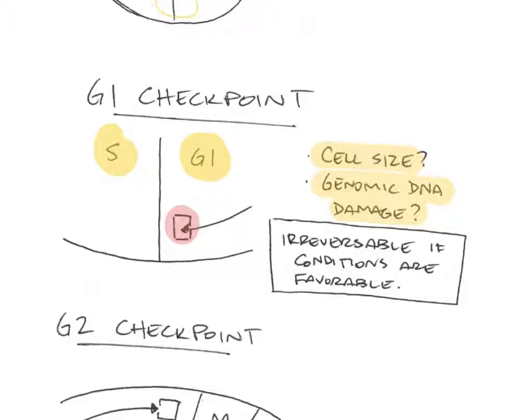And this process is irreversible, and this is really important. It is irreversible if those conditions are favorable, meaning DNA will be copied if it goes forward. And that's why a minute ago we just mentioned that it tries to repair that genetic DNA, or that genomic DNA, because if there's a mistake or if there's damage, it's going to be transferred. So this is a really important checkpoint.